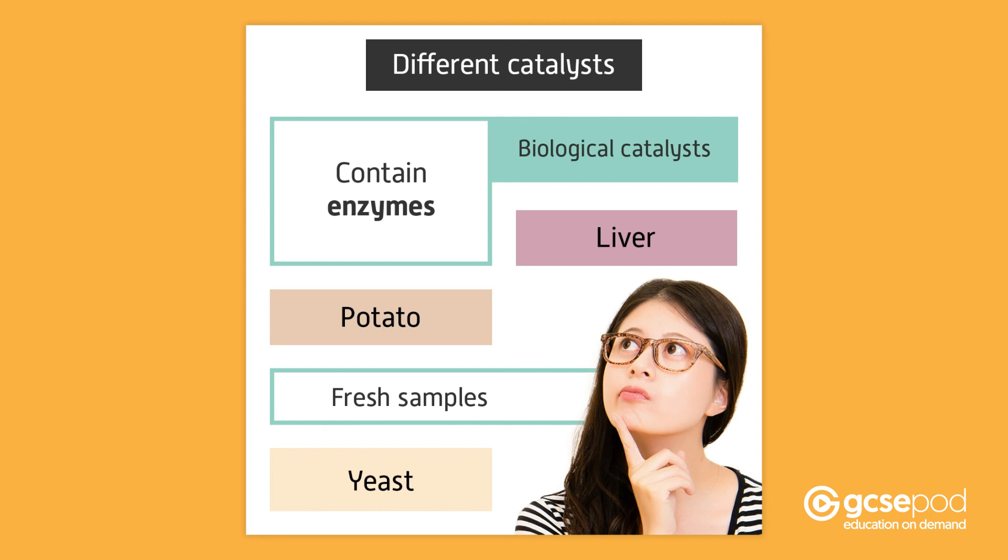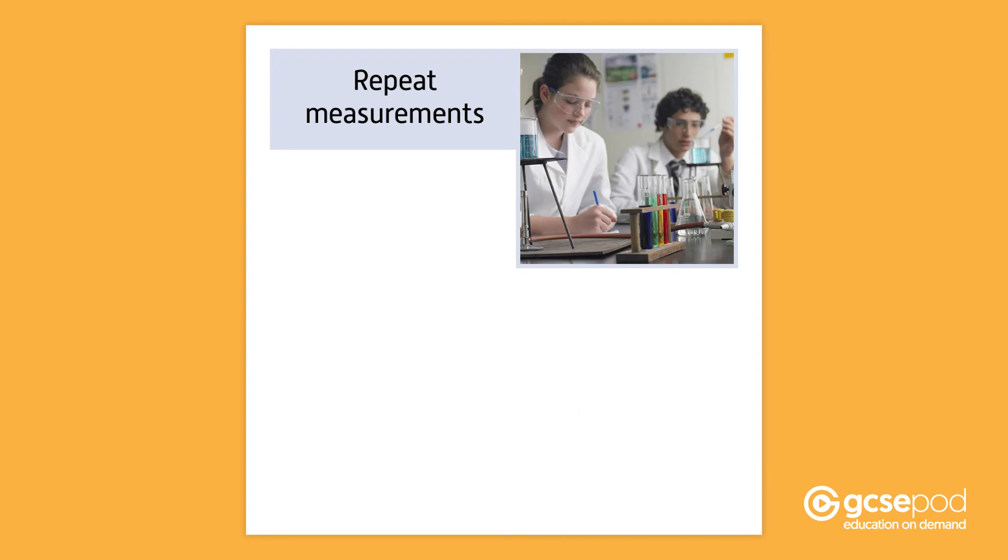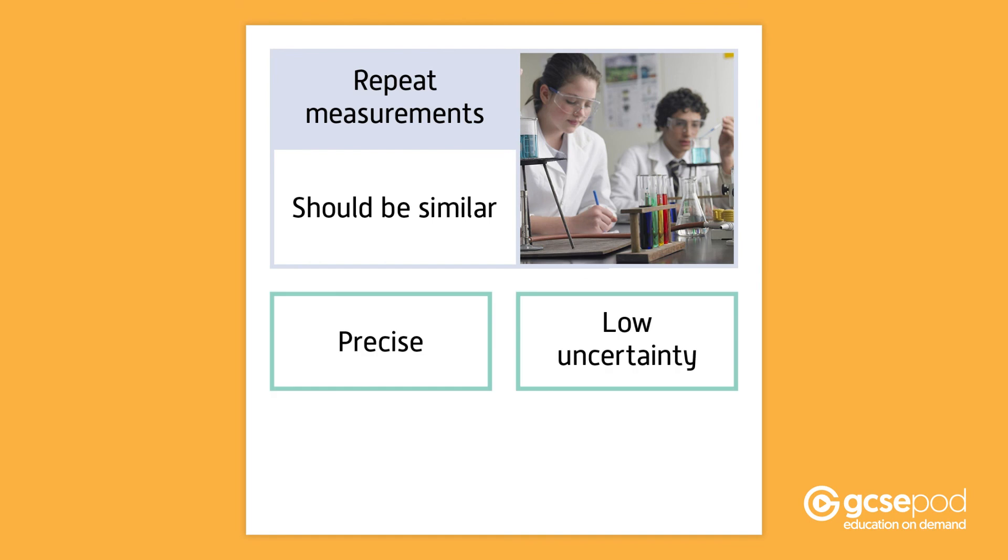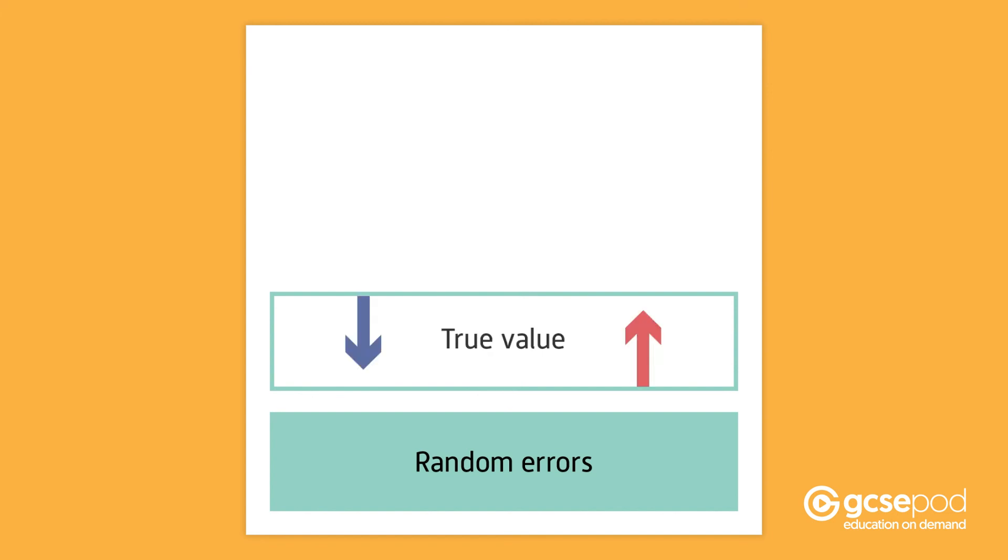To check the repeatability of your results, you can carry out repeat measurements with each catalyst. The repeats should be similar. This also means that the results are precise with low uncertainty. Your results will never be exactly the same because of the effect of random errors. These cause readings to be spread out about the true value.